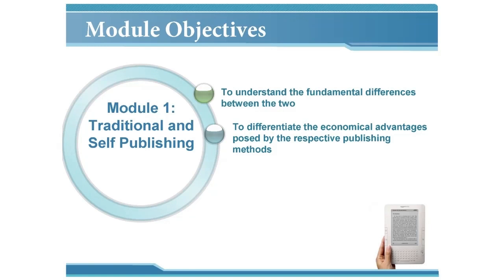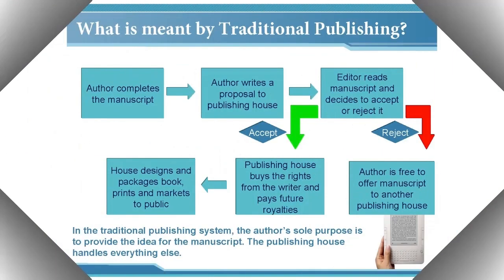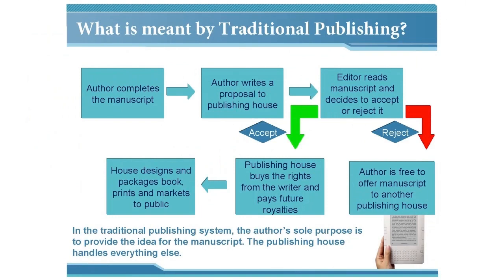Learning module one: Traditional publishing versus self-publishing. Your module objectives are to understand the fundamental differences between traditional and self-publishing, and to differentiate the economical advantages posed by the two respective publishing methods.